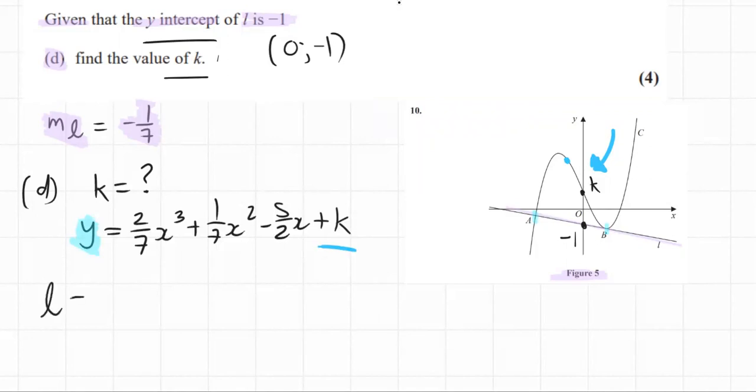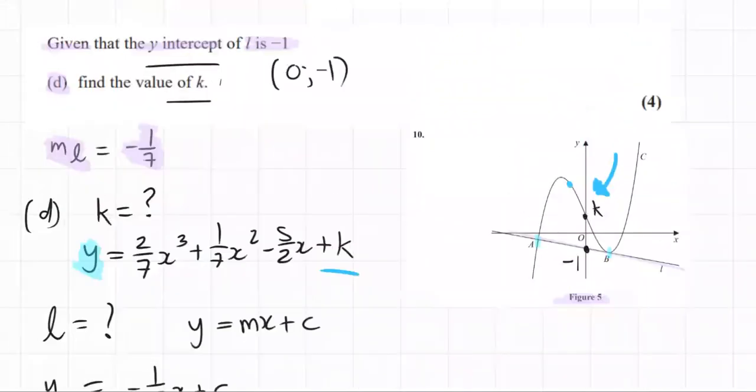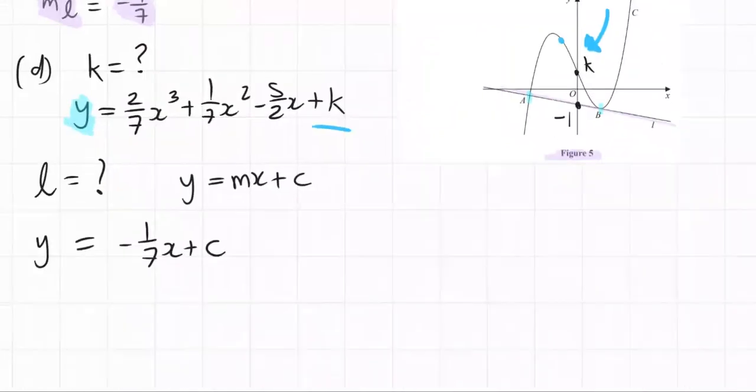So the first step is what is L? We already have the gradient of L and we know that it's a line. So y equals mx plus c is the format it's going to be in. Subbing in what we know, we have y equals negative one over seven x plus c. And then it was given that the y-intercept of L is minus one and c is the y of the y-intercept. So negative one over seven x minus one.